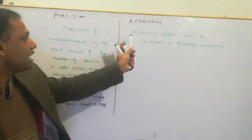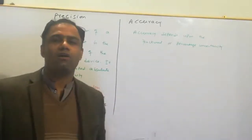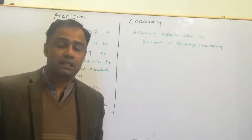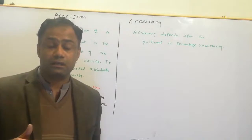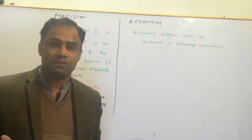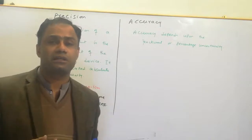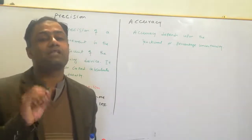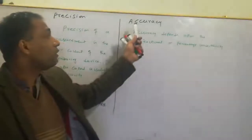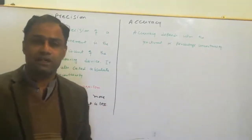On the other hand, when we talk about accuracy, accuracy depends upon the fractional or percentage uncertainty or error in a measurement. If the percentage error or percentage uncertainty is less, the measurement will be more accurate.